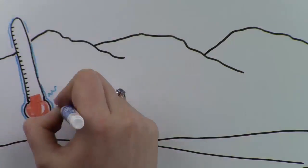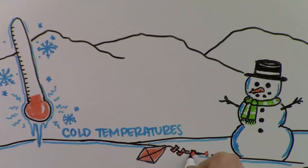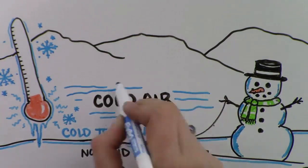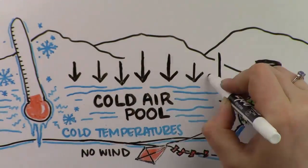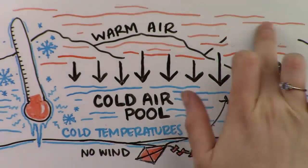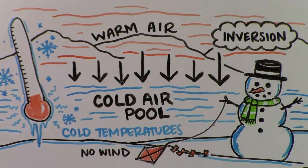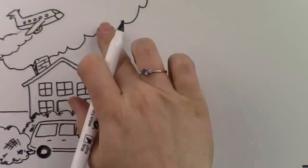Our valley is surrounded by mountains. Cold temperatures and no wind create what scientists call a cold air pool, where cold air gets trapped beneath warmer air. Most folks call this an inversion. When cars, trucks, homes, businesses, and factories burn fuel, they produce soot and nasty chemicals.